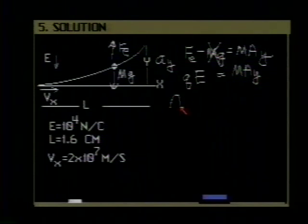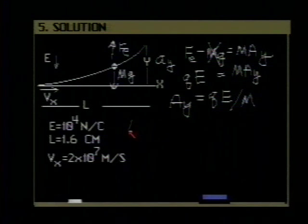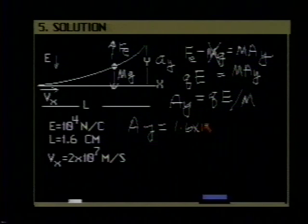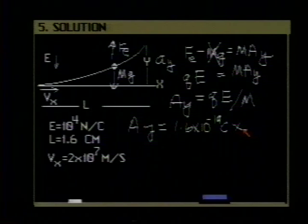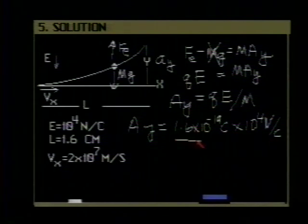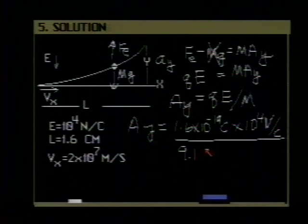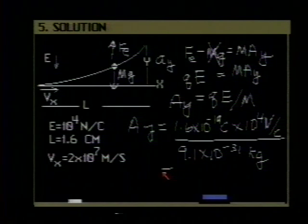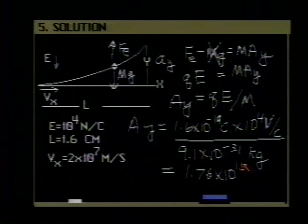Solving for a sub y, then this is equal to q, the charge on the electron multiplied by the electric field, divided by the mass of the electron. Putting in values for this, the charge on the electron is 1.6 times 10 to the minus 19 coulombs. Multiply that by the electric field strength, which is 10 to the fourth newtons per coulomb. Divide that by the mass of the electron, 9.1 times 10 to the minus 31 kilograms. And you will find that the acceleration you get from this, rounded to three significant figures, is 1.76 times 10 to the 15 meters per second per second. That's the value for a sub y.